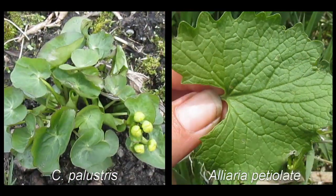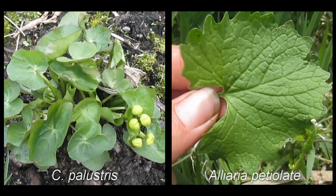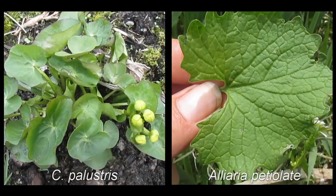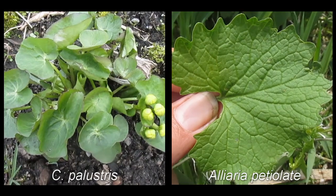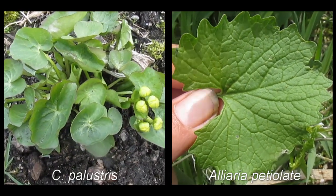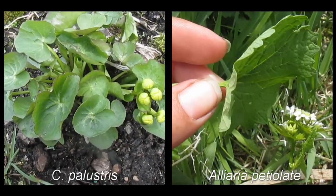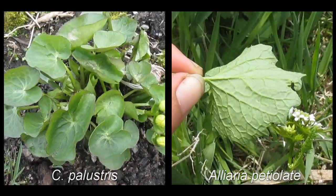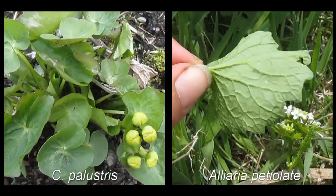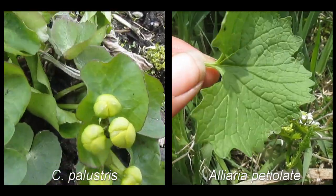Garlic mustard, Alliaria petiolata, looks somewhat similar to marsh marigold in its first year of growth. However, the leaves have a different texture, much less uniform and rounded margins, and grow in dry habitats.